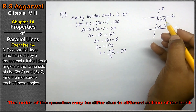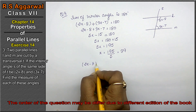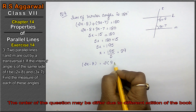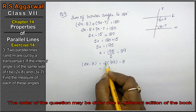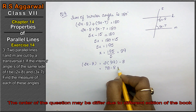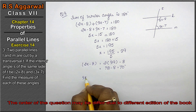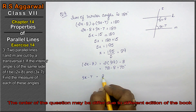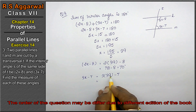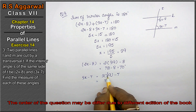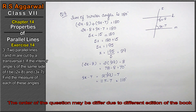Now the first angle: 2x - 8 = 2 × 39 - 8 = 78 - 8 = 70 degrees. The second angle: 3x - 7 = 3 × 39 - 7 = 117 - 7 = 110 degrees.